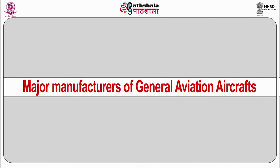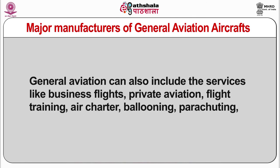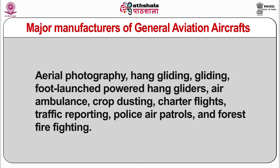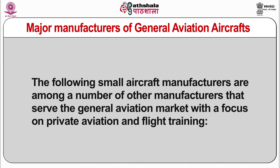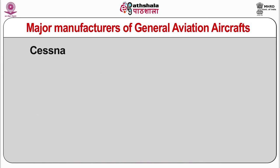General aviation may be defined as all non-scheduled civil flying operations, both private and commercial, including business flights, private aviation, flight training, air charters, ballooning, parachuting, aerial photography, hang gliding, gliding, air ambulance, crop dusting, charter flights, traffic reporting, police air patrols, and forest firefighting. The major general aviation aircraft manufacturers discussed here, focused on private aviation and flight training, include Cessna, Cirrus Design, Diamond, Mooney, and Piper.